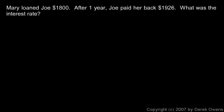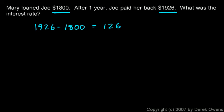Here's one more example dealing with simple interest. Mary loaned Joe eighteen hundred dollars. After one year, Joe paid her back one thousand nine hundred and twenty-six dollars. What was the interest rate for the loan? Joe borrowed eighteen hundred but paid back nineteen hundred and twenty-six, so the difference — the extra he paid back — is the interest. Nineteen hundred and twenty-six minus eighteen hundred comes out to one hundred and twenty-six dollars.